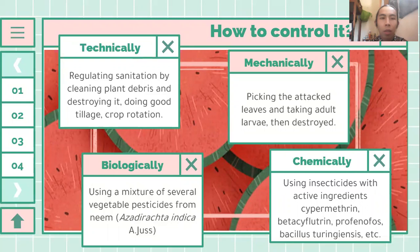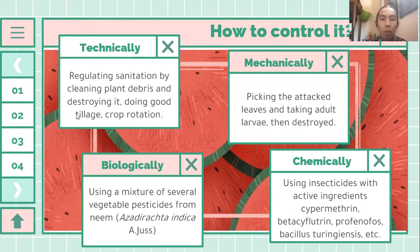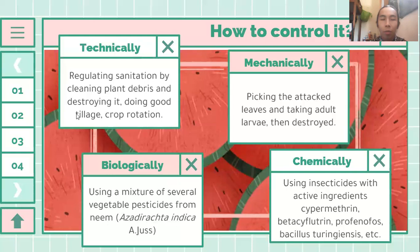How to control it? First, technically: regulation and sanitation by cleaning plant debris and destroying it, and doing good tillage and crop rotation. Mechanically: picking the attacked leaves and removing adult larvae, then destroying them. Biologically: using a mixture of vegetable pesticides from neem, or Azadirachta indica. Chemically: using insecticides with active ingredients cypermethrin, beta-cyfluthrin, profenophos, Bacillus thuringiensis, and others.